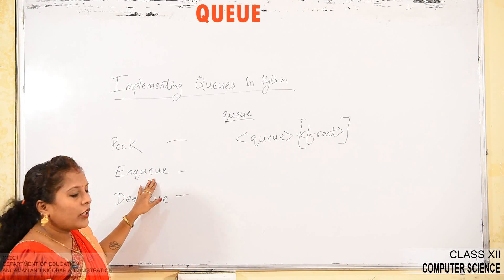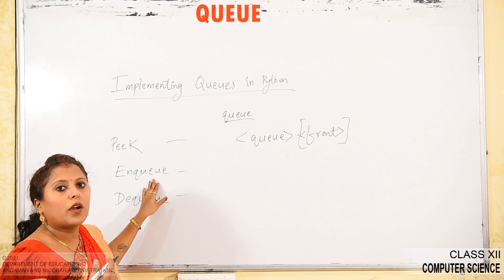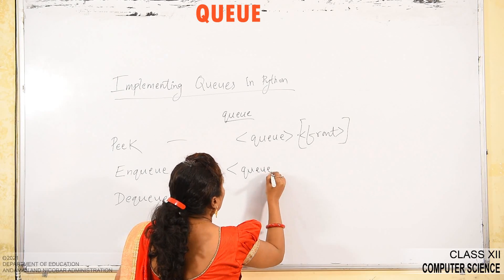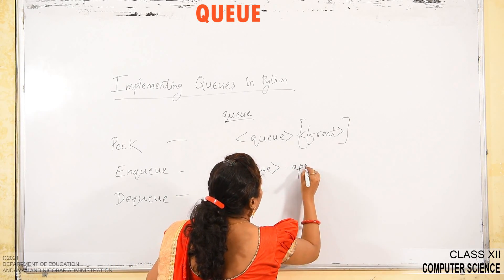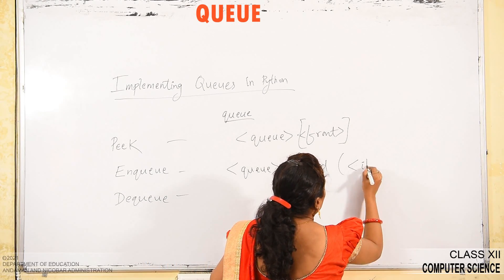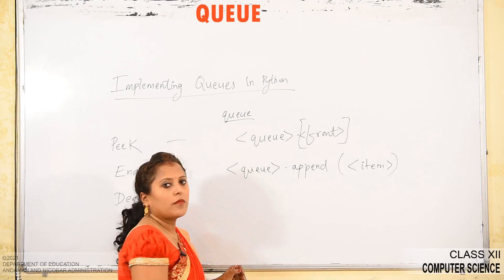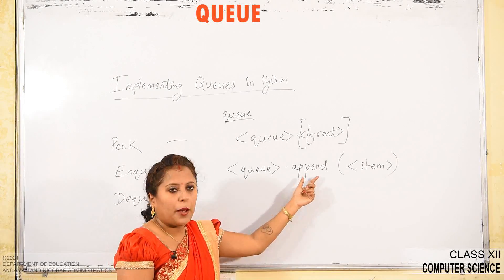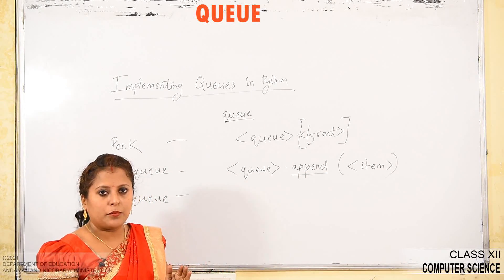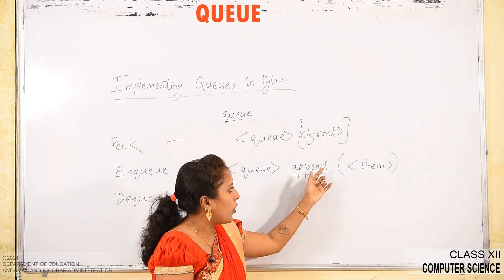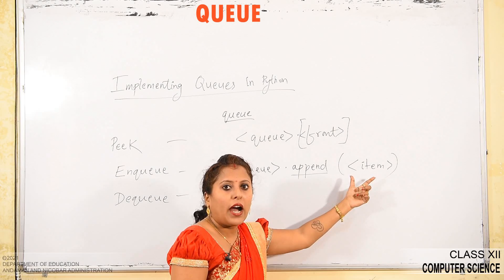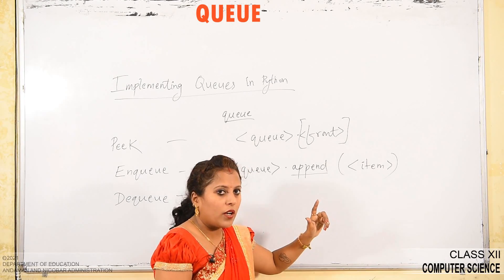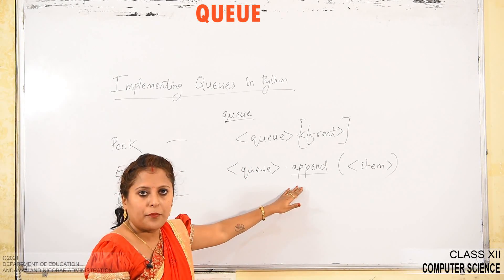For enqueue (NQ), if you want to insert an item into the queue, you write Q.append(item). The append method adds the given item. Insertion happens at the back end or rear end, not the front end. So for NQ, you use Q.append(item).